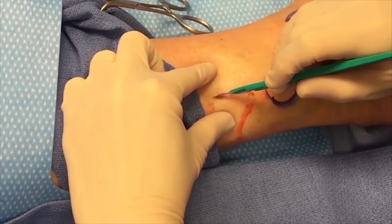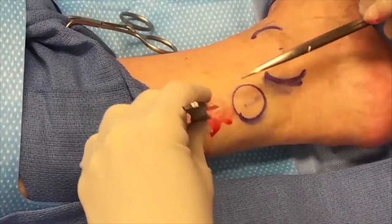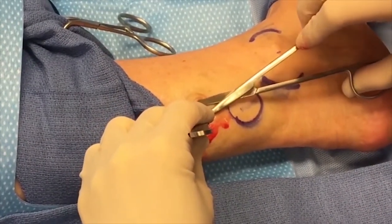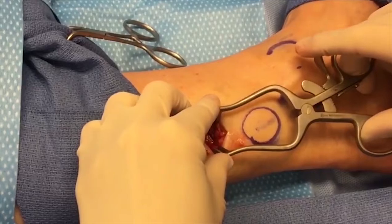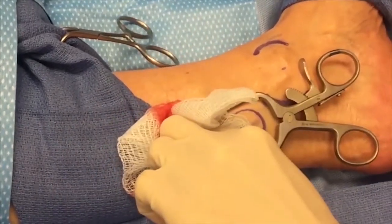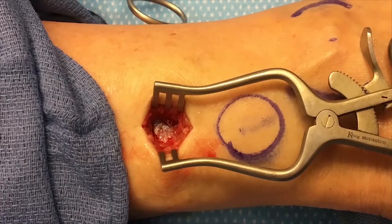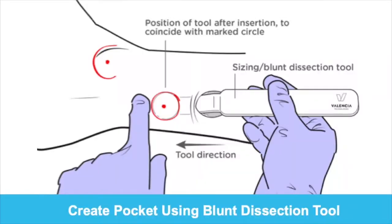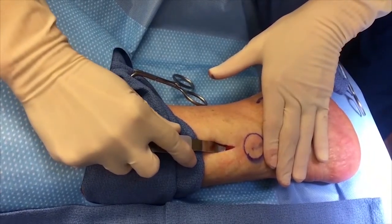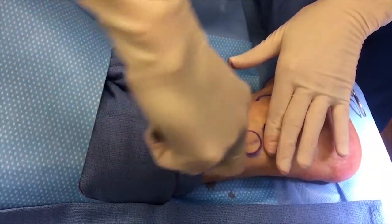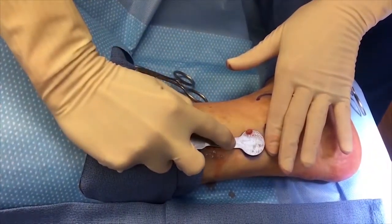Step 5: Make Incision and Create Device Pocket. With a scalpel, make an incision on the marked longitudinal line. Using dissecting scissors, bluntly separate the subcutaneous fat layer and identify the plane between the subcutaneous fat and the fascia. A self-retaining retractor helps visualization while performing the blunt dissection. Once the fat is cleared, the fascia will be visible — it appears as a white layer with transverse fibers. The blunt dissection tool was developed to simplify pocket creation. Gently and firmly push the tool until its rounded end coincides with the marked circle on the overlying skin.